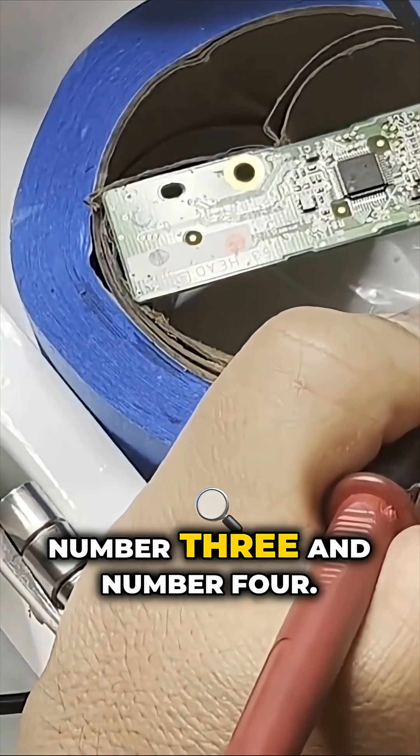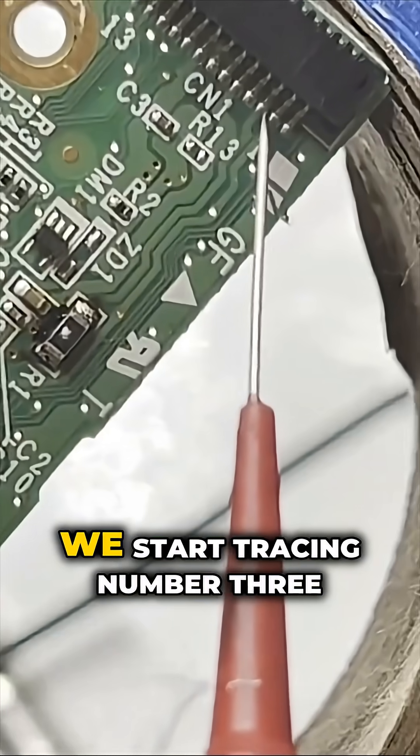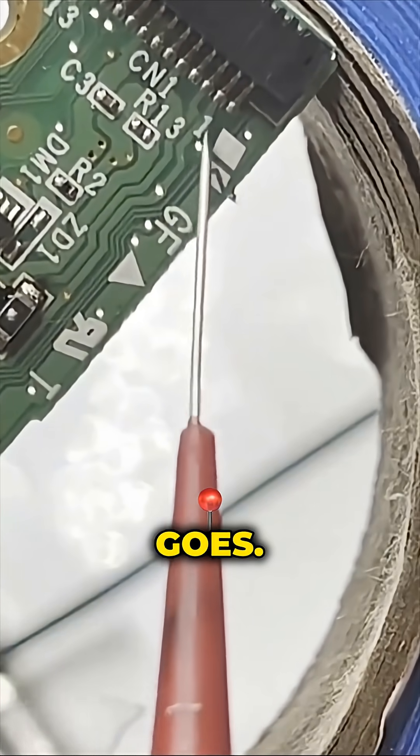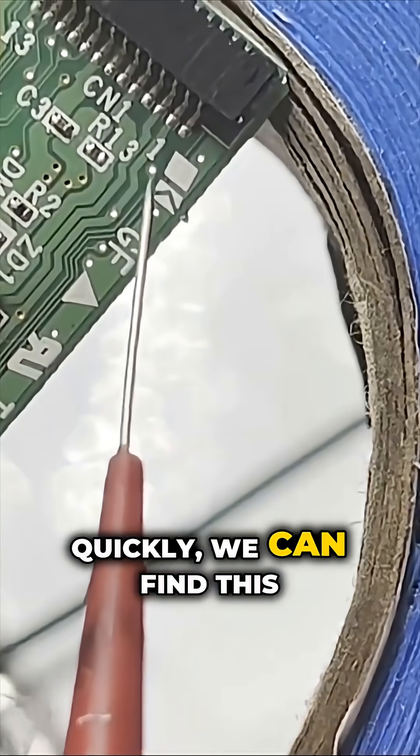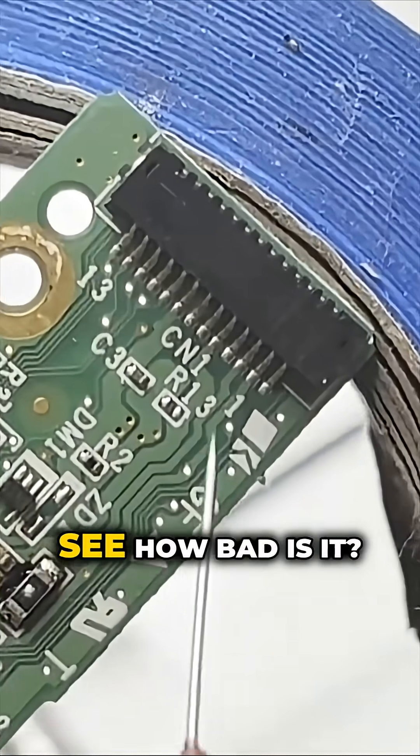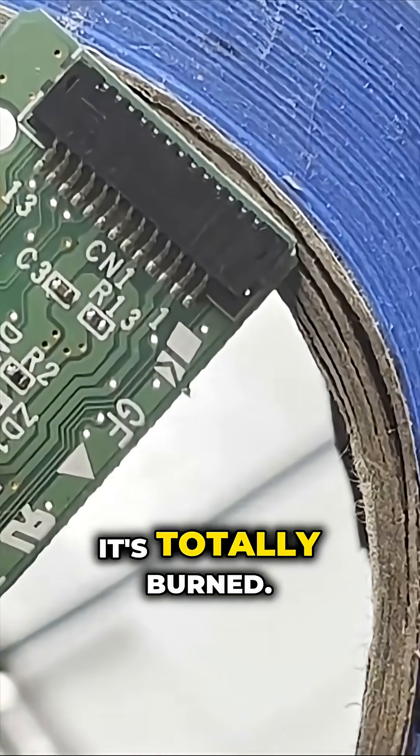Let's take a quick look at number three and number four. We start tracing number three and number four, see where it goes, and quickly we can find this resistor got blown out. See how bad it is, it's totally burned.